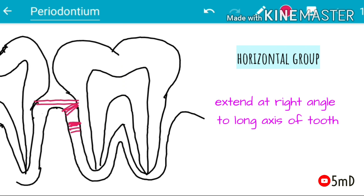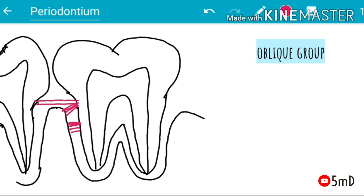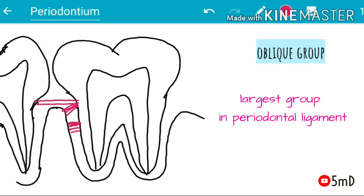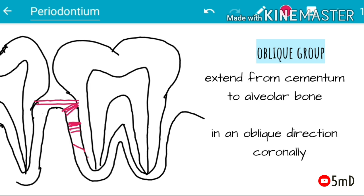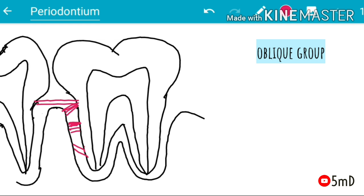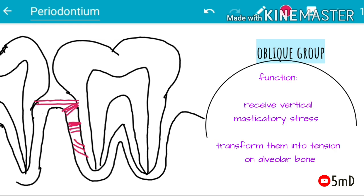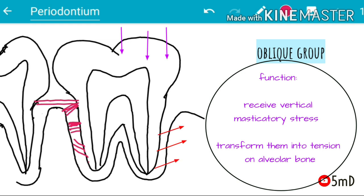The oblique group is the largest group of principal fibers in the periodontal ligament. They extend from the cementum towards the alveolar bone in an oblique direction coronally. They receive the vertical masticatory stresses that the tooth experiences and transform them into tension on the alveolar bone.